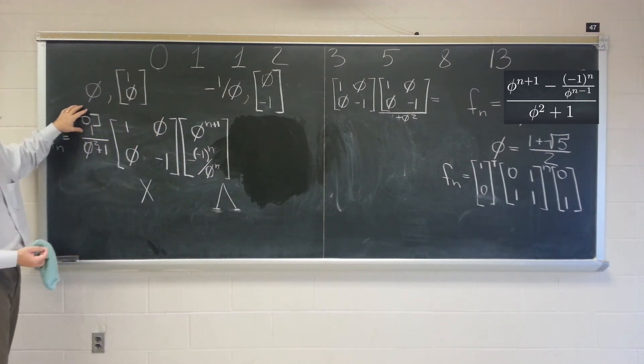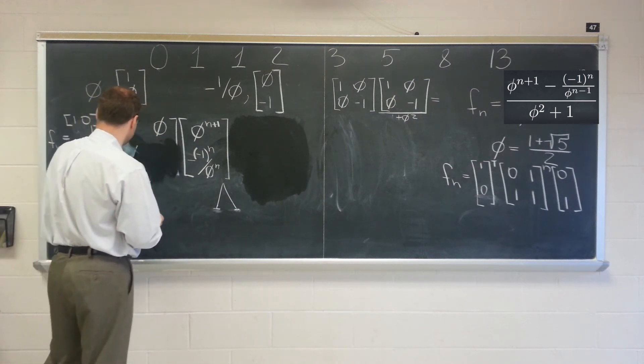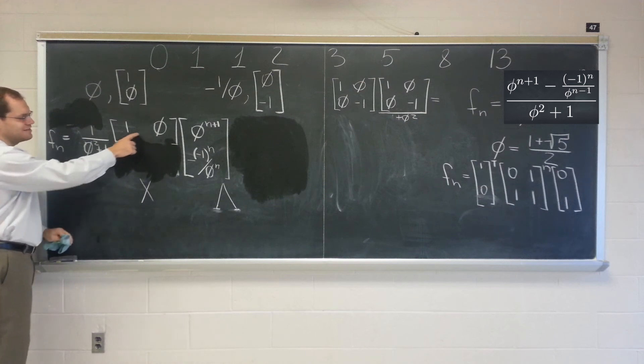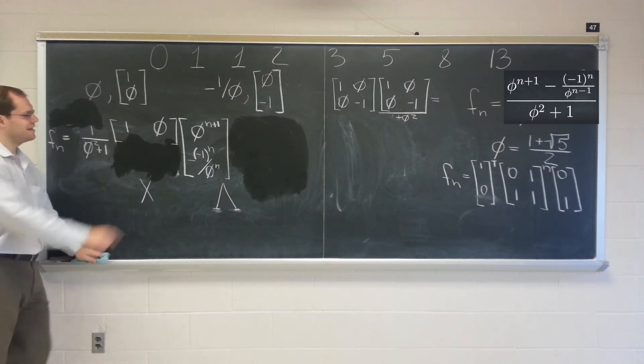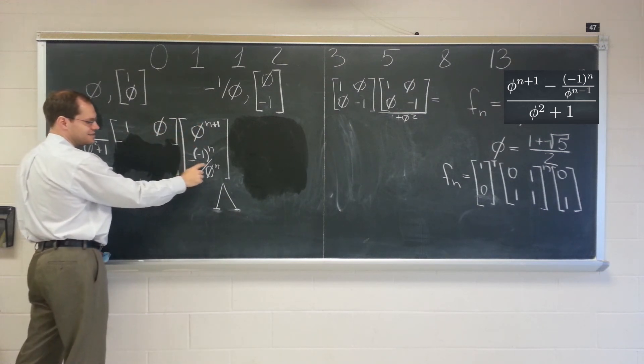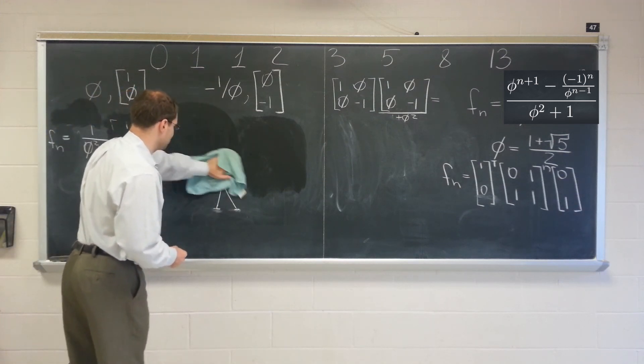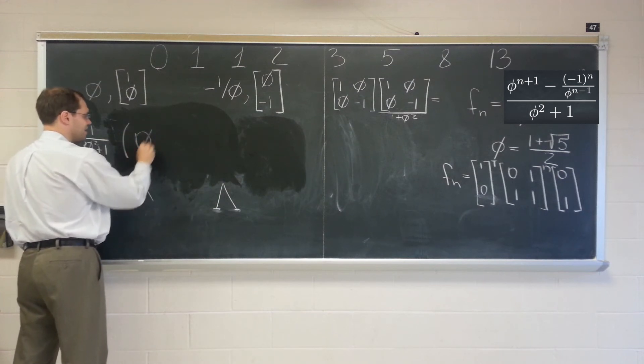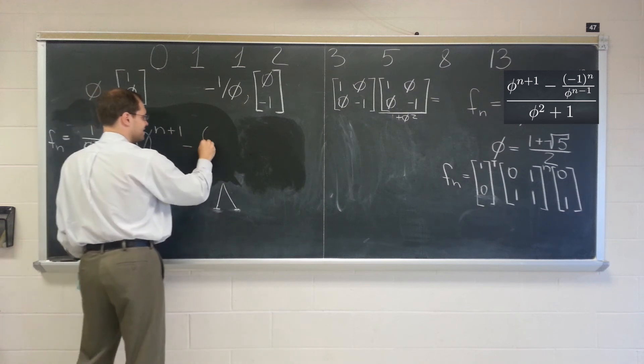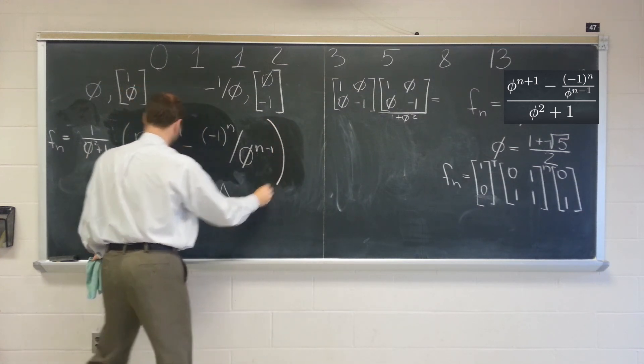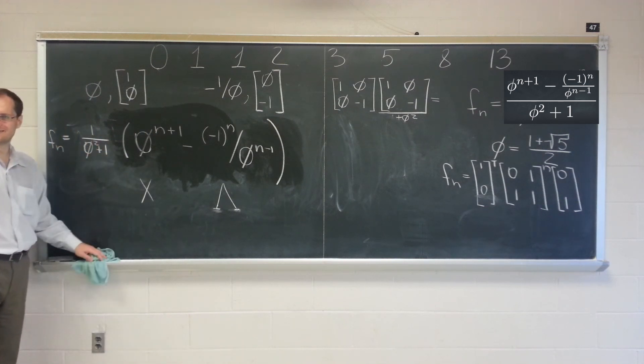So I think at this point, we're better off now multiplying this by this. So we avoid this 2 by 2 multiplication. So what is this matrix multiplying this matrix? Of course, it'll just extract the first row. So it'll just be this. Very easy to write. And now we just have to multiply this. And it's going to be the sum of phi to the n plus 1st power minus this with phi to the n minus 1st power. There you go. Hopefully I remember. So it's going to be this times phi to the n plus 1 minus negative 1 to the n divided by phi to the n minus 1. Divided by 1 over phi squared plus 1. This completes our derivation.